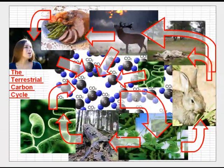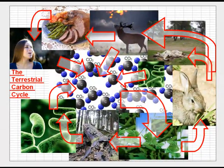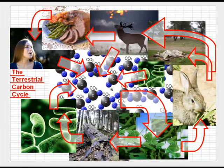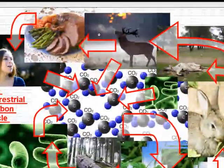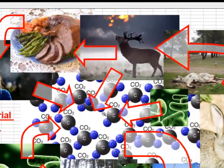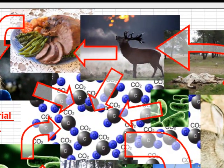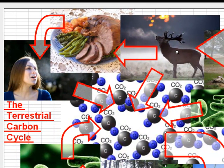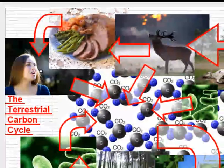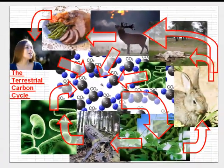Another variation: the carbon dioxide makes the leaves grow, the leaves are eaten by animals, and then the animals breathe out carbon dioxide which goes back into the atmosphere. Or perhaps another variation is humans eat the animals, and after we have eaten the animals, we breathe out carbon dioxide back into the atmosphere again.